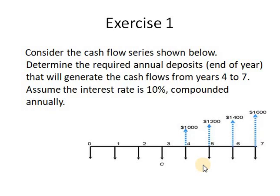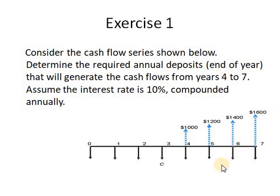To get the present value of this arithmetic gradient, you have to split it into two parts: the part related to the annuity, which is the base amount of $1,000, and the present value of the gradient. The gradient in this case is $200, since the amount increases by $200 each period.